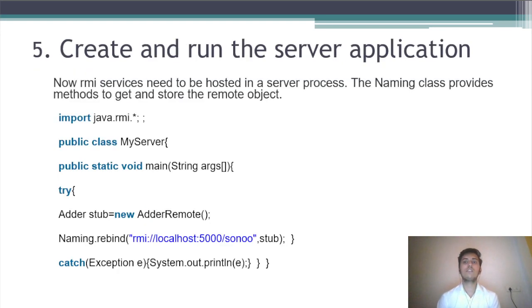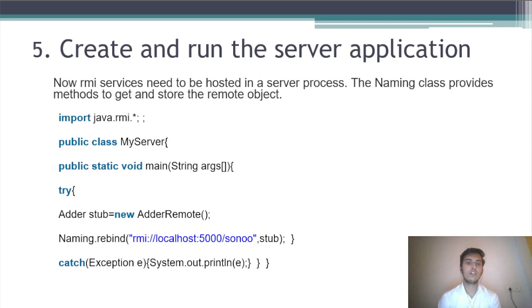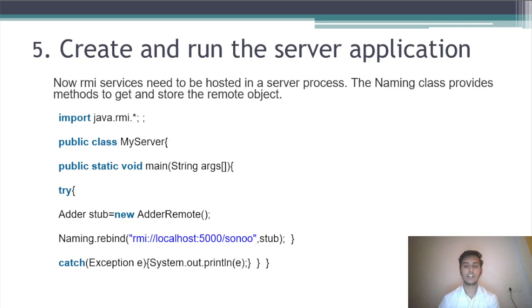Step five: create and run the server application. The RMI service needs to be hosted in the server process. The Naming class provides methods to get and store the remote object. In this program, we first import the necessary packages, then create a server class MyServer with a main method, create an object of Adder, use the rebind method, and catch any exceptions.